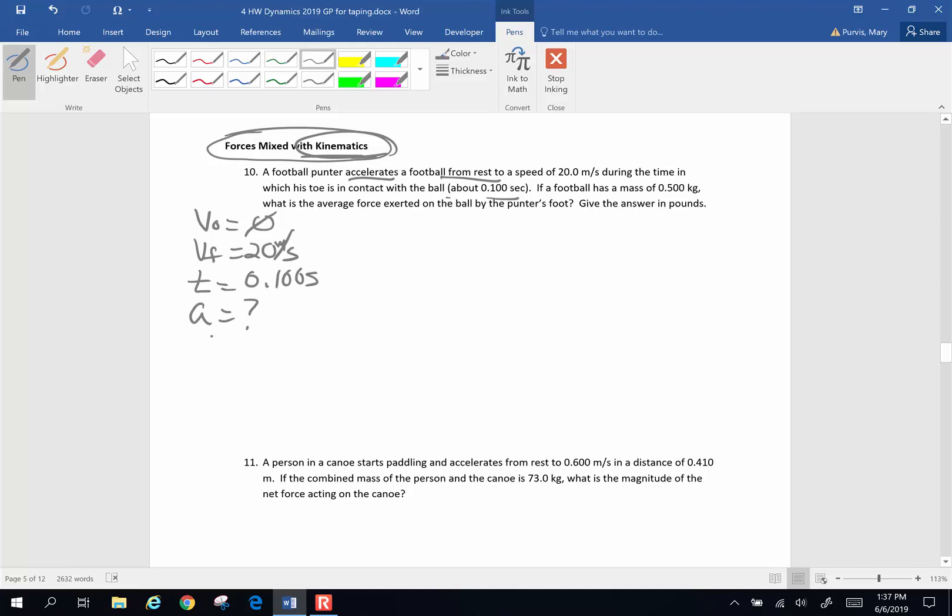And we want to know the rate of acceleration. So before we get into the forces, let's calculate, let's find the acceleration. Look at your kinematics equations. Which equation is going to have all that in it? I think I'm going to choose VF is VO plus AT. Original velocity is 0. So that's going to go away. Acceleration is going to be final velocity divided by time. Or 20 meters per second divided by 0.100 seconds. So 20 divided by 0.1, I get an acceleration of 200 meters per second divided by seconds, meters per second squared. So that's my rate of acceleration.